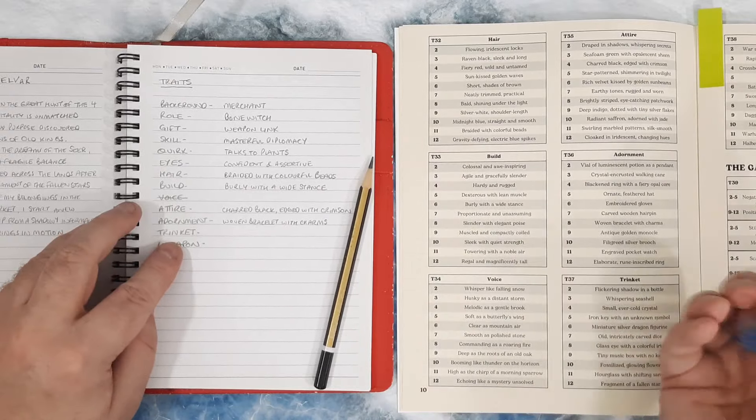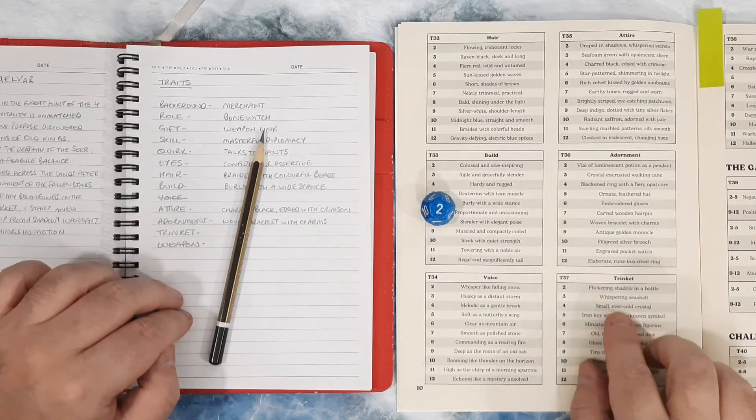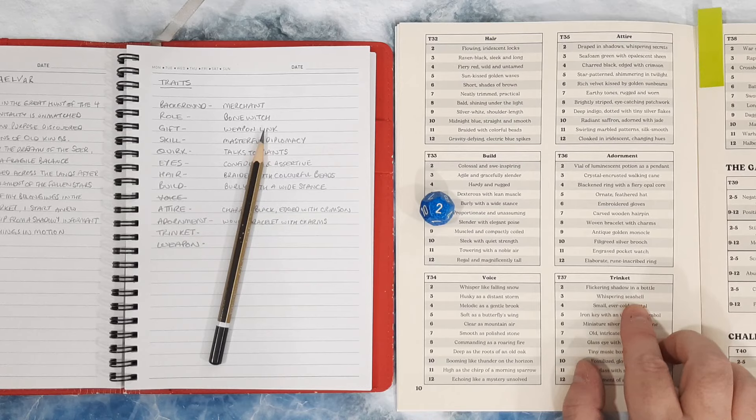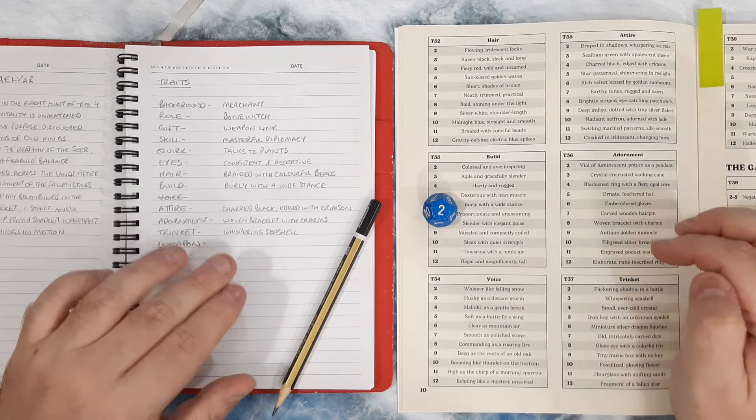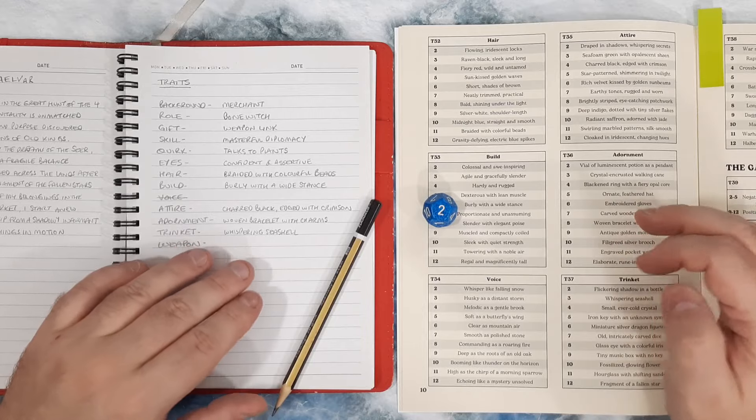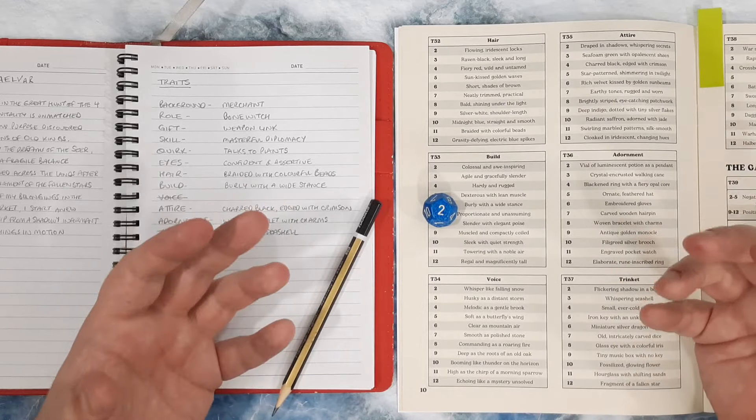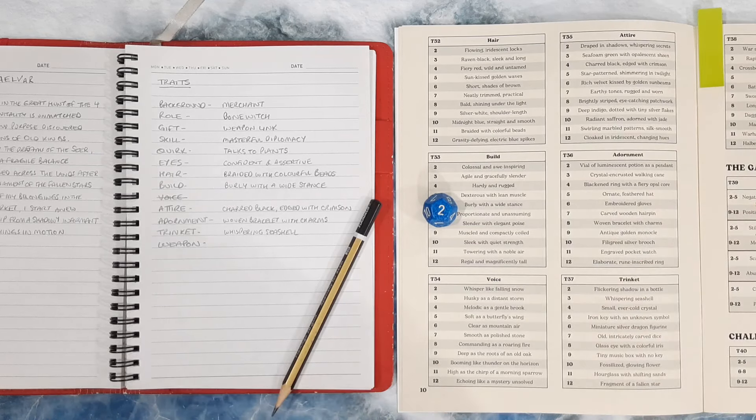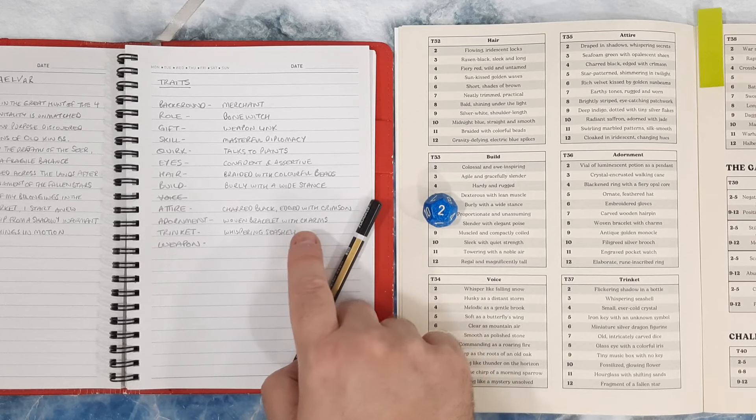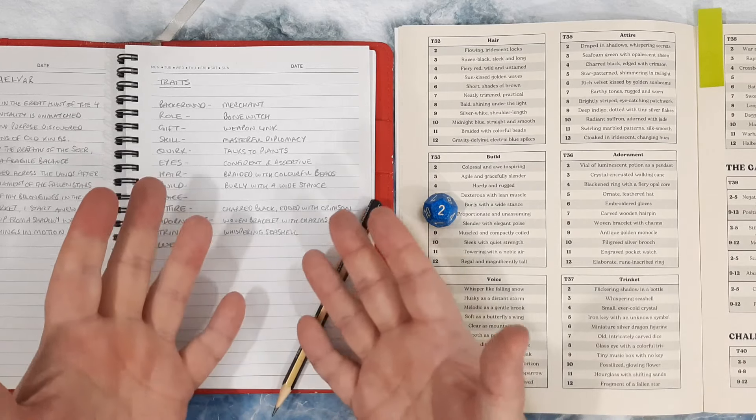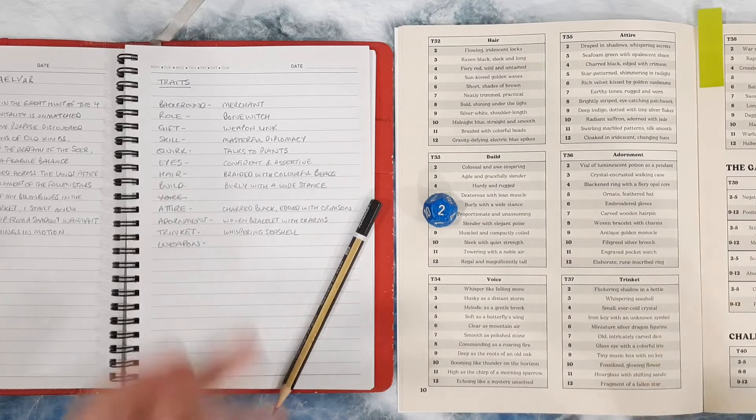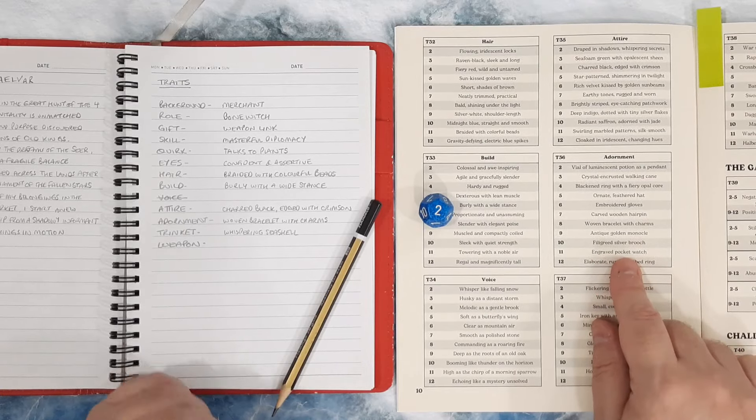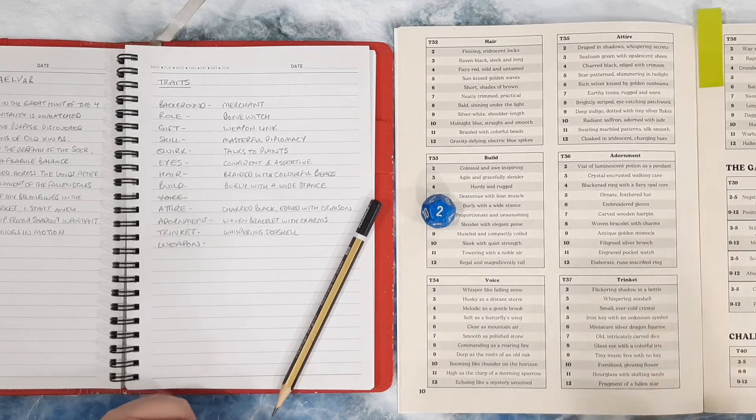Okay. Trinket. What trinket do I have? Two. A whispering seashell. Okay. I mean, another thing that I'm liking is I'm not really rolling up anything sort of majorly valuable or maybe things that I would be missing after the thieves stole everything. I mean, they probably wouldn't take a woven bracelet with charms, you know, or a whispering seashell. I don't think the thieves would probably take those, so I've probably still got those. But if I'd rolled, for example, like an engraved pocket watch, I'm kind of thinking that the thieves would probably have taken that.